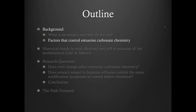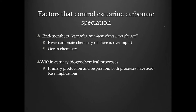Let me briefly go over a few factors that affect estuarine carbonate chemistry. First, because estuaries are initially defined as the place where seawater meets river water, the river water and seawater are considered as two end members. River water chemistry and ocean water chemistry will play an important role in determining the chemistry of estuarine waters. In addition to mixing, there are also within-estuary biogeochemical processes such as primary production and respiration, and also calcium carbonate precipitation and dissolution, which will both influence estuarine carbonate chemistry.